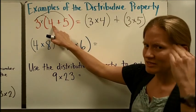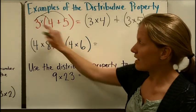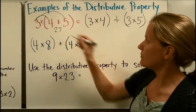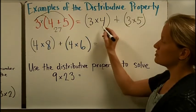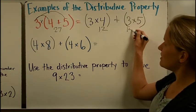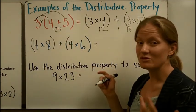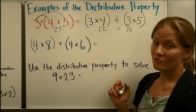Over here, let's mentally check that. Four plus five would be nine, times three would be 27. Over here, four times three is 12. Three times five is 15, and 12 plus 15 does make 27. So we have modeled the distributive property correctly.